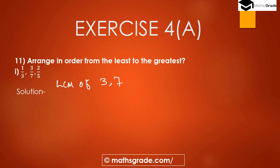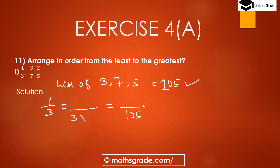LCM of 3, 7, and 5 is: 3 multiplied with 7 is 21, and 21 multiplied with 5 is 105. So LCM is 105. Now convert 1/3 into an equivalent rational number. We multiply denominator 3 by 35 to get 105, so we multiply the numerator 1 by 35 as well. That gives us 35/105.